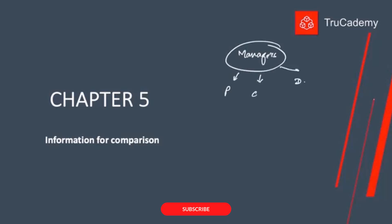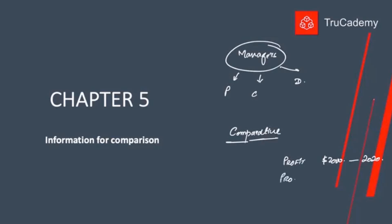Whenever we provide information to the manager for these purposes, that information needs to be comparative. For example, if I only tell the manager that the profit for the year 2020 is two thousand dollars, that doesn't mean anything — it's not meaningful or useful information. But if we report comparative information — for example, in 2020 we have a profit of two thousand dollars, while in 2019 we had a loss of five hundred dollars — now this is comparative information.